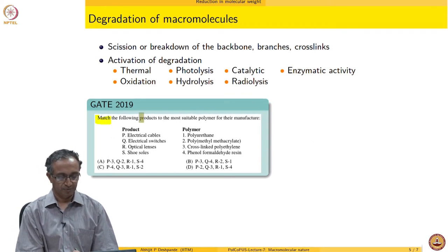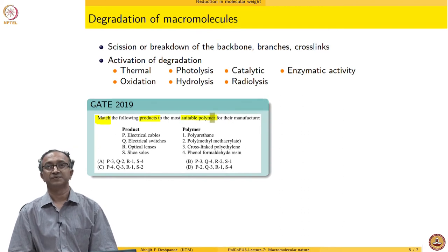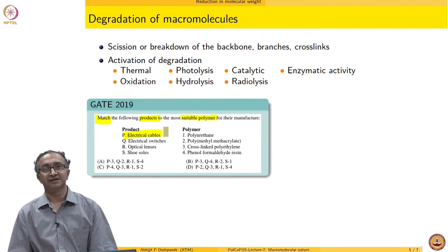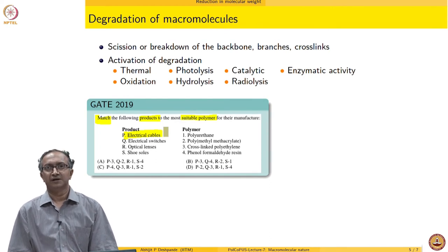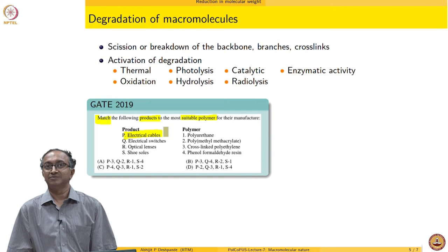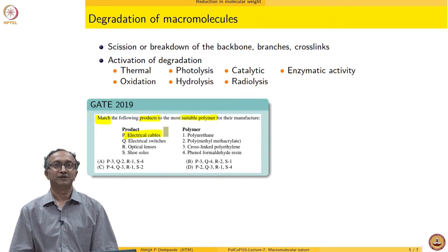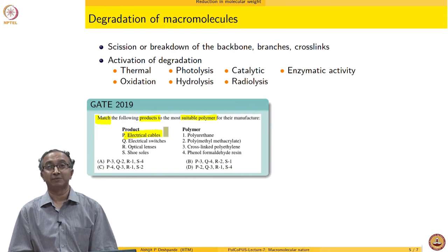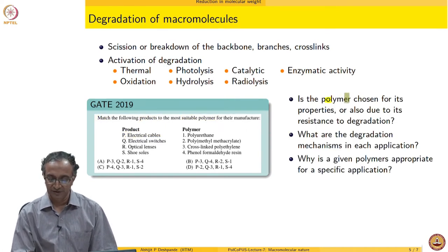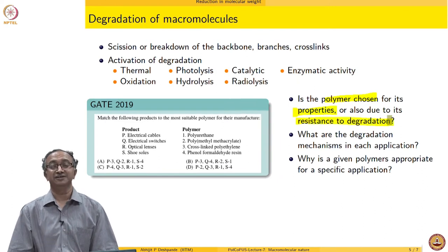We can ponder over this question: we are supposed to match a product to a polymer, and all of these products are very familiar in our day-to-day life. Let us say electrical cable — why would you choose a particular polymer for an electrical cable application? Your answer immediately will be that it has the right insulating properties. Some of you may add that it has to be mechanically stable also. But all of you are thinking in terms of properties alone. Is that the only reason we will use a polymer for a given application? The answer is no — there are other considerations also. Is the polymer chosen only for its properties, or also because it is resistant to degradation during the application?